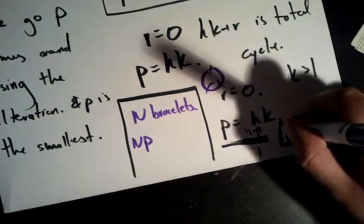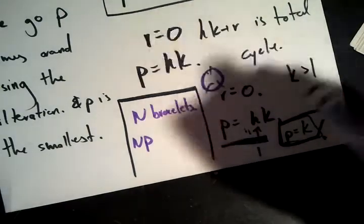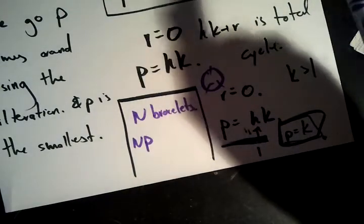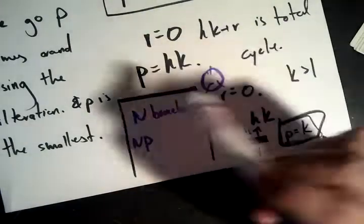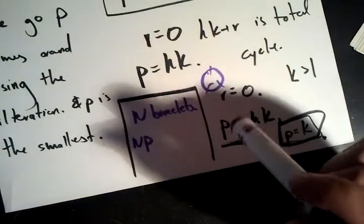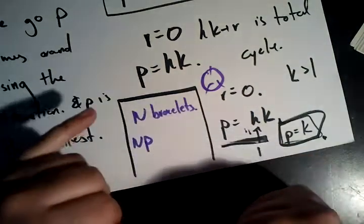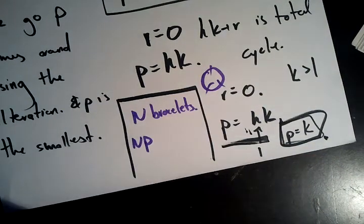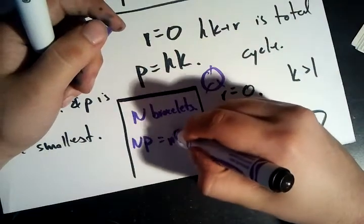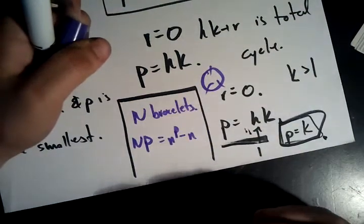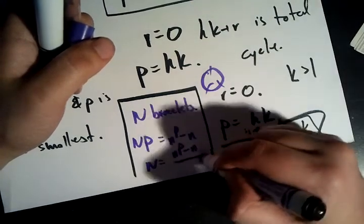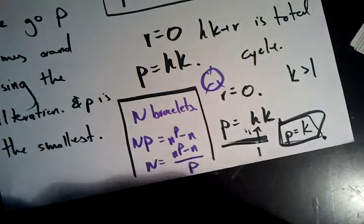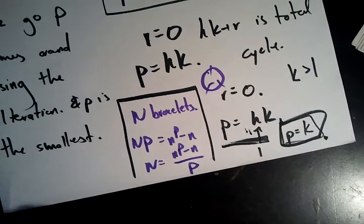That is because P equals K. So that means P is the least number of times that we can cycle through using our alteration for each string to get the same string again. That means that for N bracelets, and there are a bunch of different kinds of bracelets, then N, which is our number of bracelets, times the number of times we cycle through them, will give us the total number of strings, which is N to the P minus N. Remember, we're not doing the unicolor ones. That means that N equals N to the power of P minus N over P, which proves that P divides N to the power of P minus N, proving Fermat's Little Theorem.